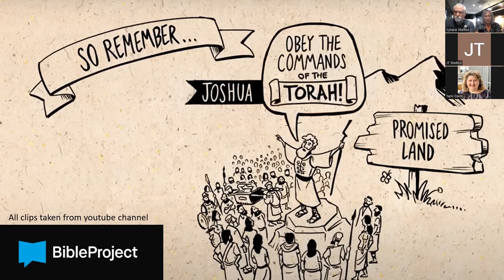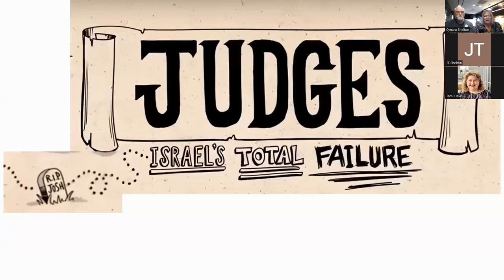Joshua led God's people into the promised land and reminded them to be faithful to their covenant with God and to obey the commands of the Torah. They were in their prescribed lands to a certain extent. Judges is basically a tragic story of Israel's total failure — Joshua's died and they are left to their own devices.